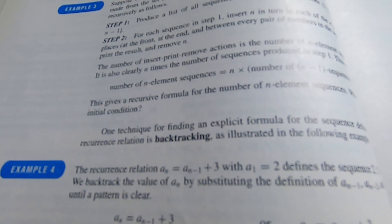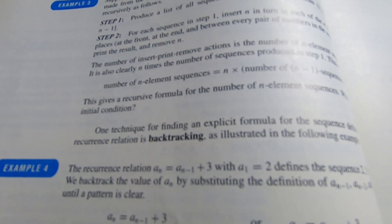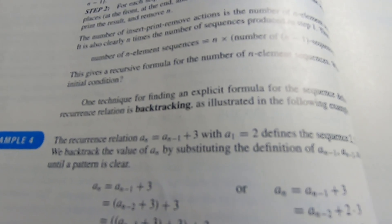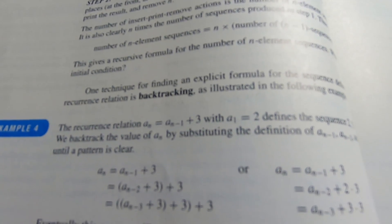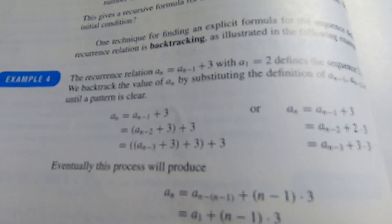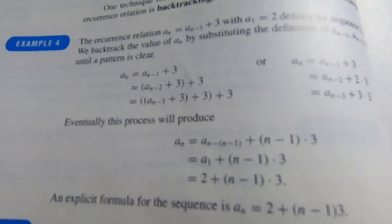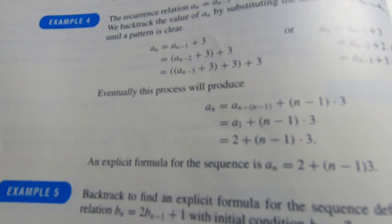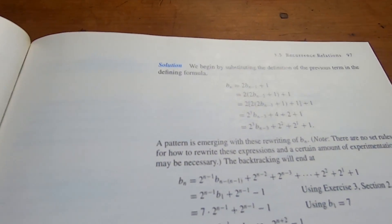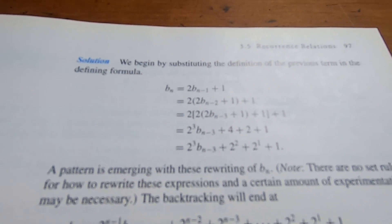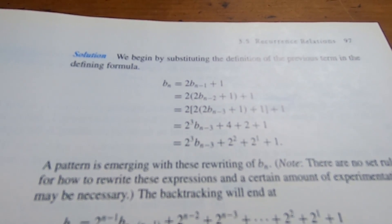This is the section on recurrence relations. They do some really nice examples of using the method known as backtracking, and they explain it really well. It's very well written, and I really think this is better written than a lot of the other popular books. I've done reviews on Grimaldi's book and also on Rawson's book on discrete math, which are actually also very good books, but they're harder to read than this book.